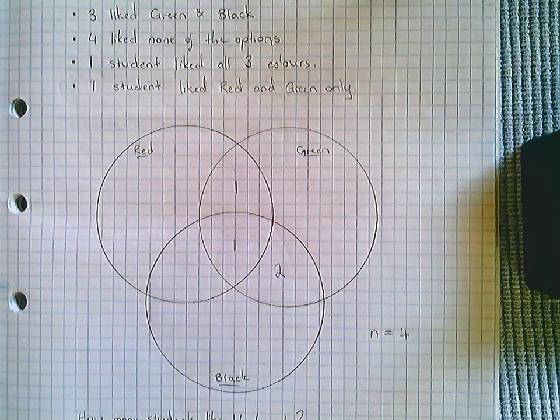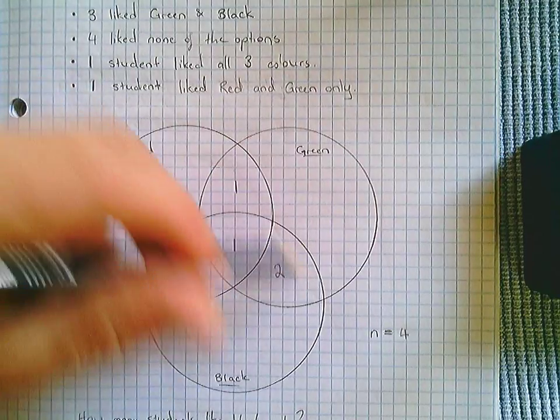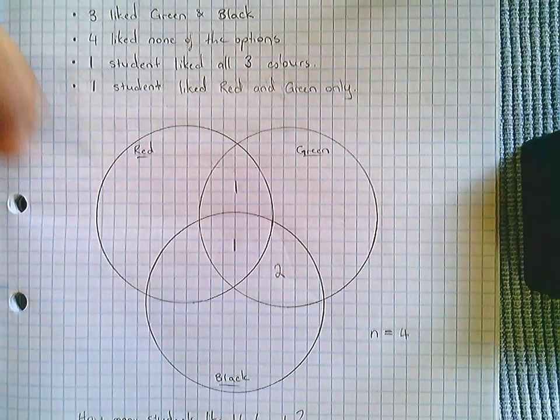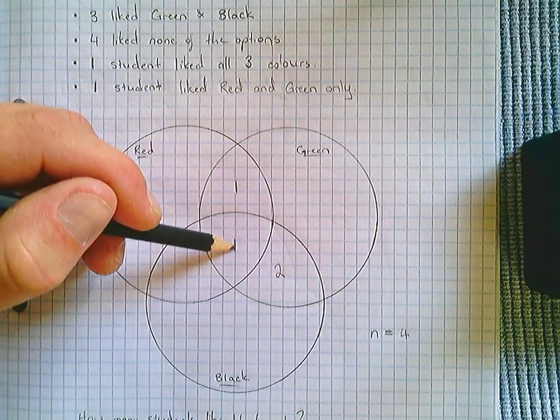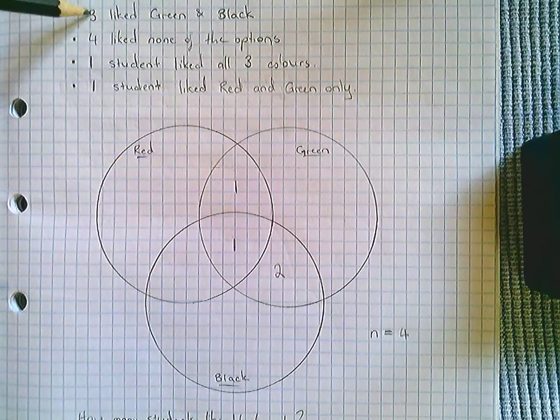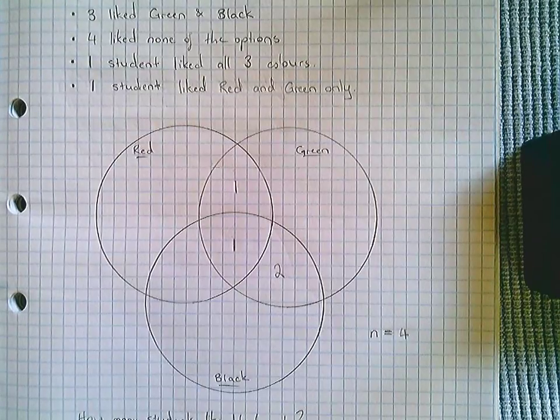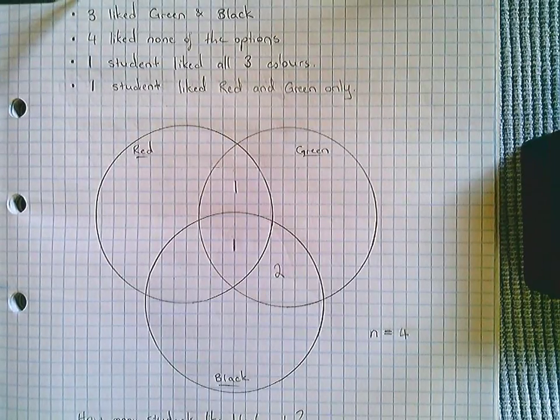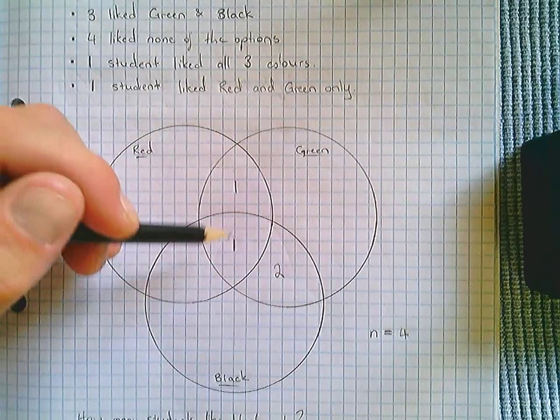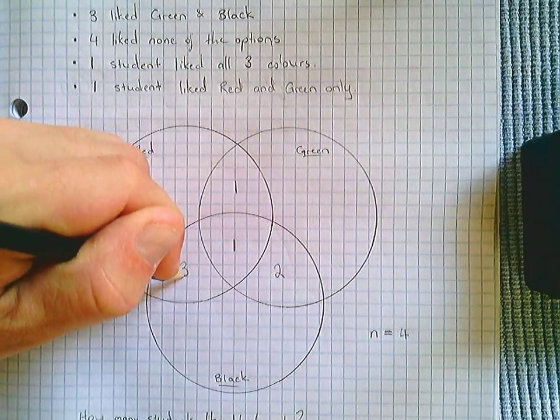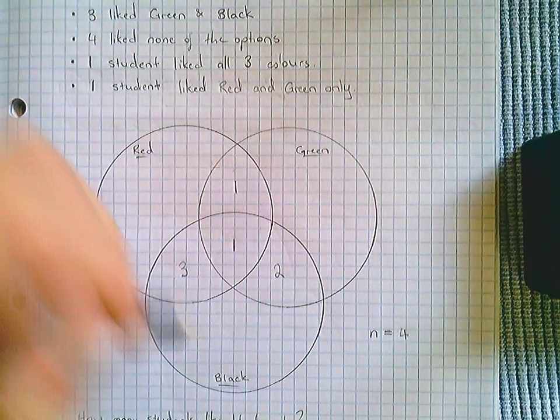Four students liked red and black. Looking at the red and black intersection, this person definitely likes red and black, there's no denying it. So they will fit into that, which means that this and this must add to four, which would be one plus three, to get my four that like red and black.